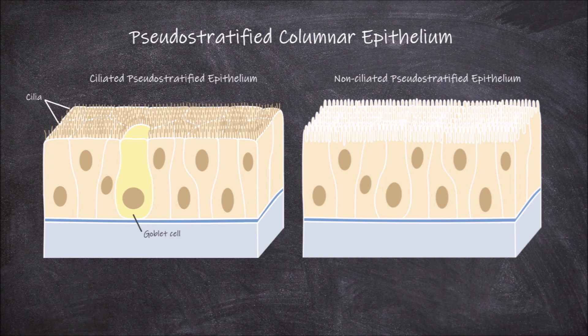Goblet cells primarily function in secretion. They secrete mucus that lubricates the internal surfaces of the parts of the body they are located in. Ciliated pseudostratified columnar epithelial cells are found lining most of the upper respiratory system, for example lining the trachea.